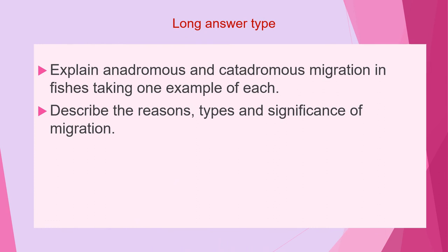The third category of questions are long answer questions. The first question of this category is: explain anadromous and catadromous migration in fishes, taking one example of each. Next question is: describe the reasons, types, and significance of migration.